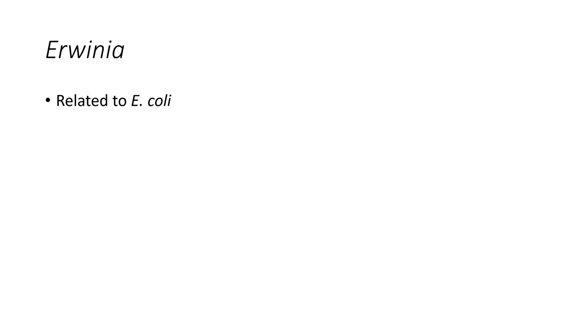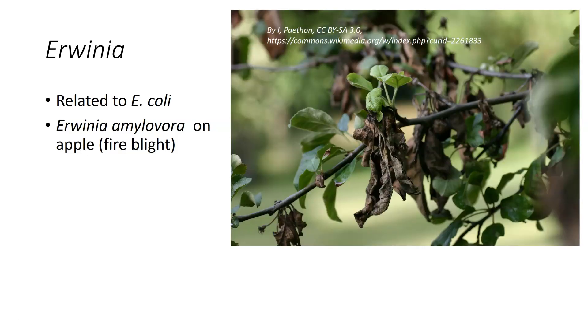Erwinia is one of the big, classic genera of plant pathogenic bacteria. For the most part, these provide some sort of rot or blight. They are related to E. coli and are gram-negative bacilli. The principal one we look at is Erwinia amylovora, which occurs on apple and creates a disease called fire blight. These clusters of dead leaves are due to a bacterial infection. It's called fire blight because it looks like the ends were actually burnt, though you can see new leaves coming out — fire blight is a very problematic disease.